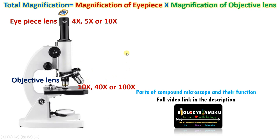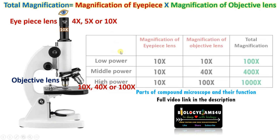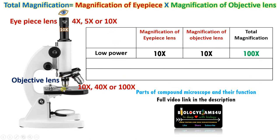Let's take some examples. Suppose we are viewing using a 10x eyepiece. First, we need to look at the specimen on the slide using low power, which is 10x. So the magnification of the eyepiece lens is 10x and the magnification of the objective lens is 10x, giving a total magnification of 10 × 10 = 100x.